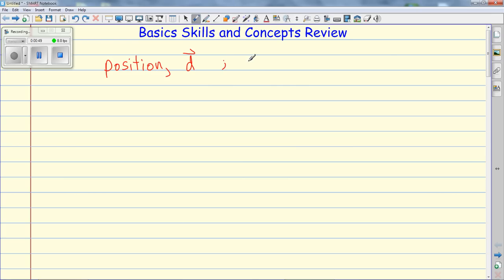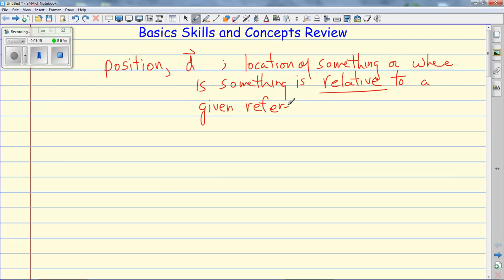The position of an object is the location of something, or where something is relative to, and this is crucial, a given reference point. You must define a reference point. Location means nothing unless you refer it back to somewhere. Like, for example, your house and GPS. If you look at Google Maps it always wants to give a to and from, so you need a location and something relative to somewhere else.